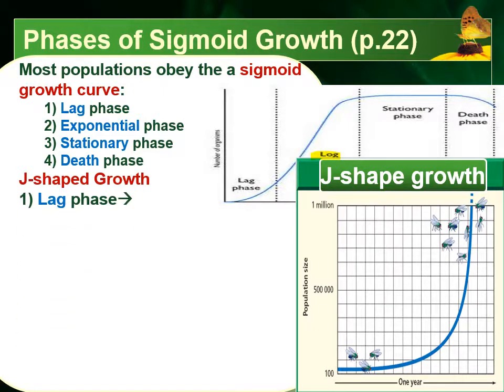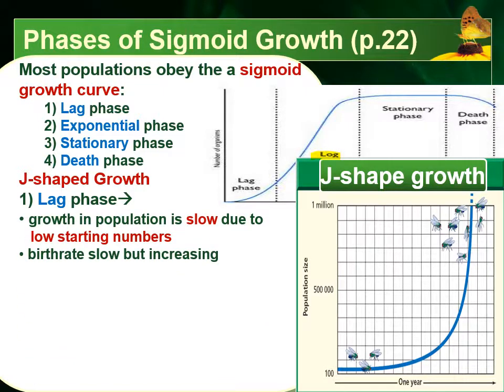During the lag phase, the population grows very slowly. That's mostly because there is a very low number of starting individuals — the population is very, very small. Even though everyone in the population might be reproducing successfully, because there are so few members at the very beginning, the population doesn't actually grow quickly at the start. The birth rate is very slow, but it will be increasing as time goes on.